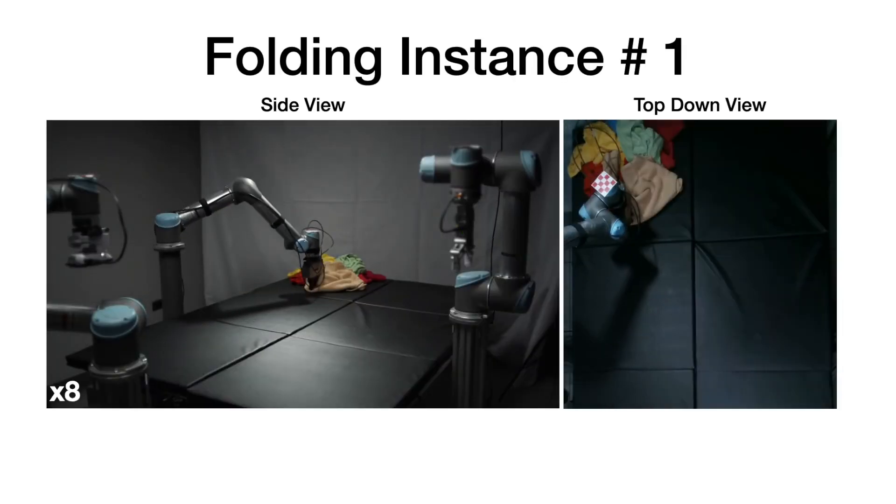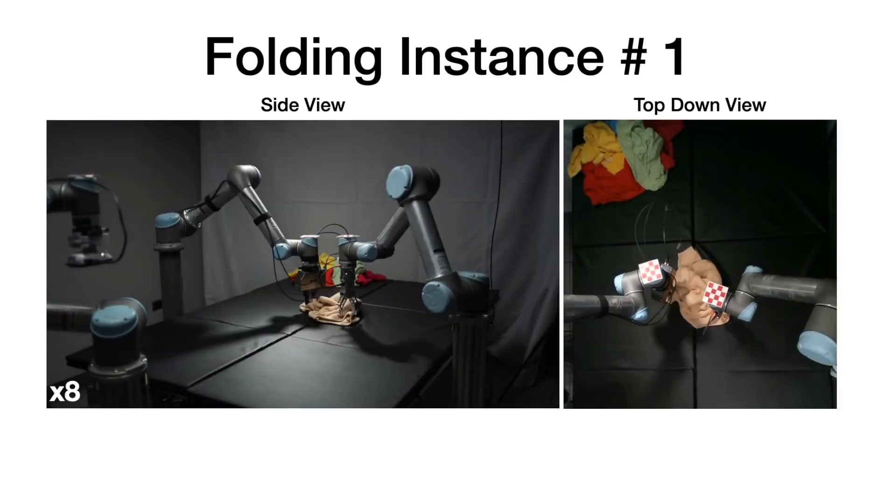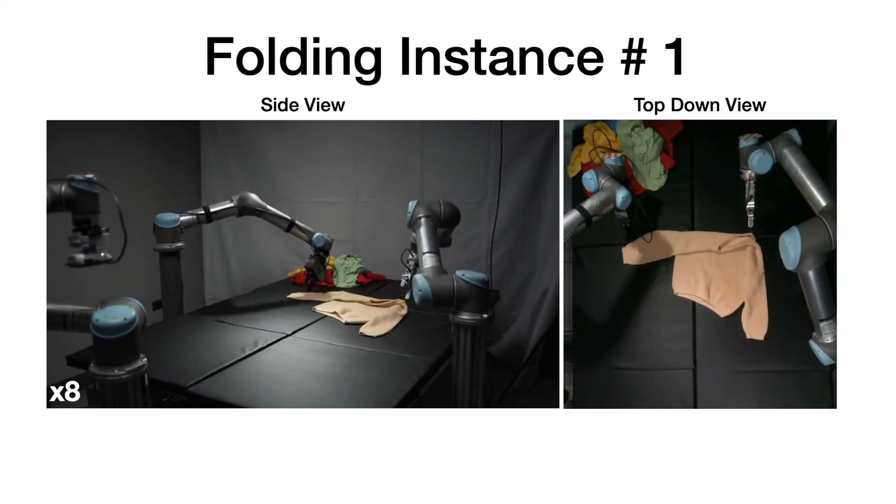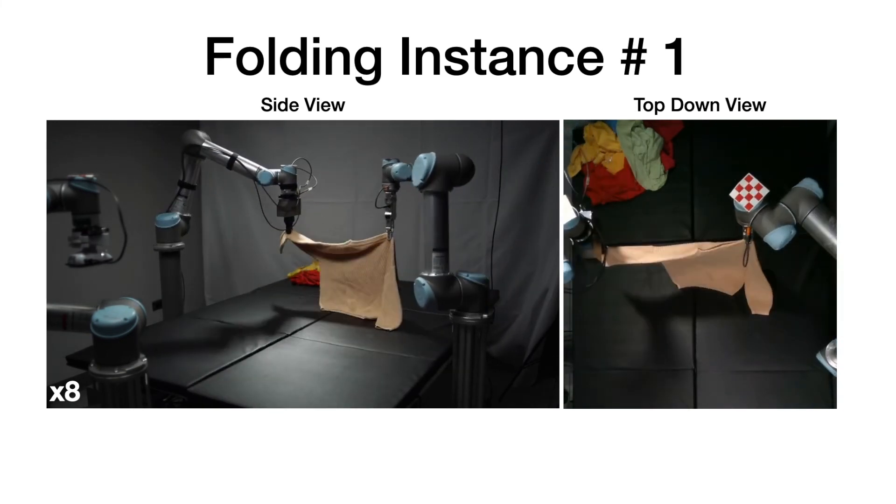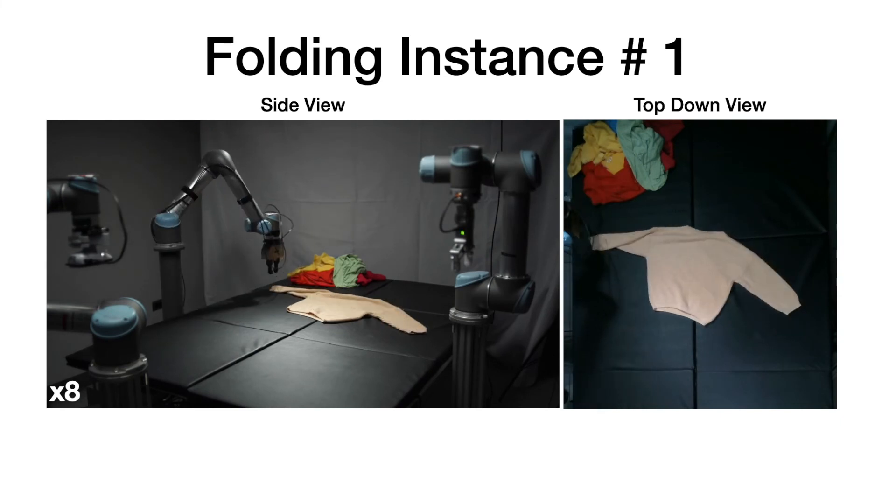Next, we show some real-world applications of our task. As the first downstream application, we present shirt folding. As you can see, the robot first resets the cloth, and then it flings the cloth a few times to unfold it and align it.